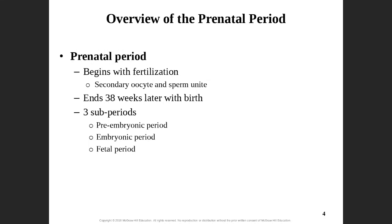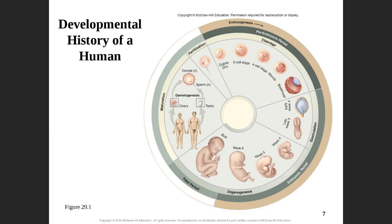Let's talk about the prenatal period — what happens after fertilization of the secondary oocyte from the sperm. The prenatal period is going to be a period of 38 weeks, sometimes as long as 40. There are three periods to it: the pre-embryonic period, followed by the embryonic period, and then finally the fetal period. We use this little wheel here to explain all those. We start with fertilization, then we have our pre-embryonic period, followed by our embryonic period, and then finally the fetal period.